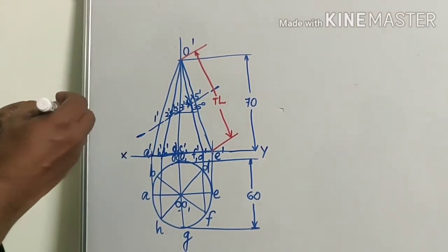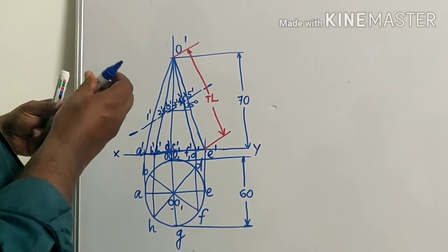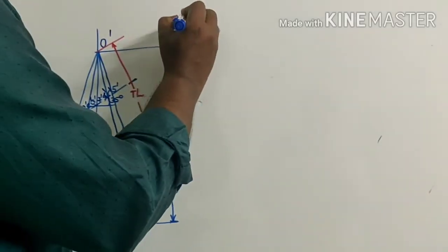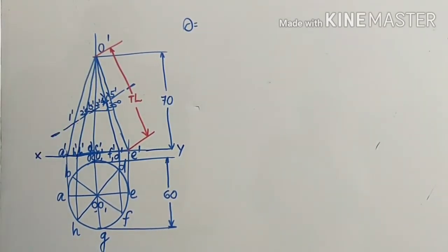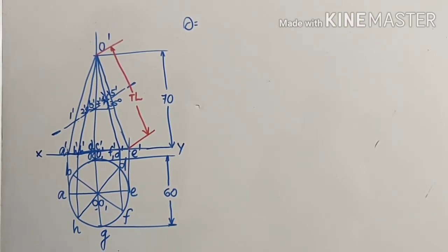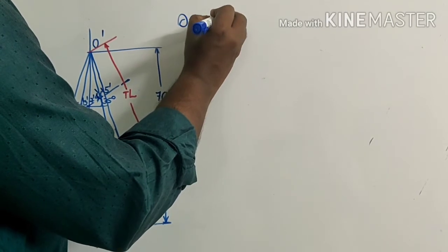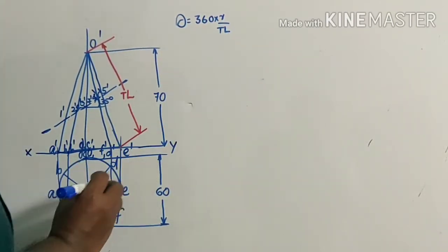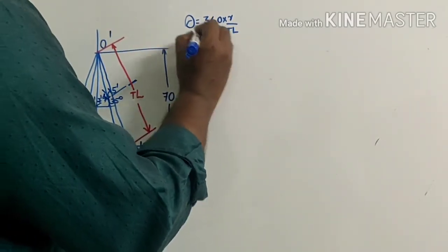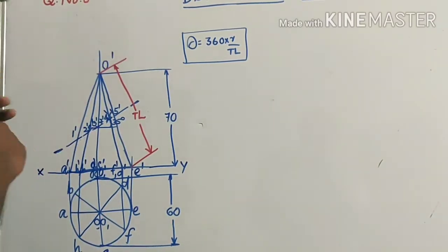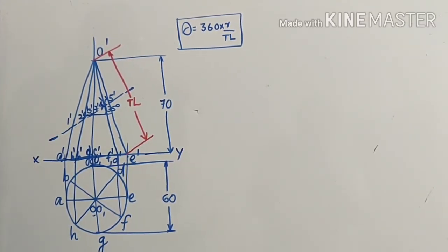The next step is to find out theta. Last class, we have seen how to find out theta. Theta is the included angle of the sector which you are getting as the development. So you have to find out theta for this particular problem. Theta is equal to 360 multiplied by R divided by the true length. Here R is equal to 30 mm. You can measure the true length, and according to my calculation, theta may be around 160 to 170 degrees.